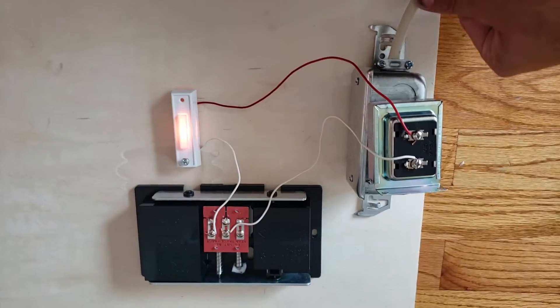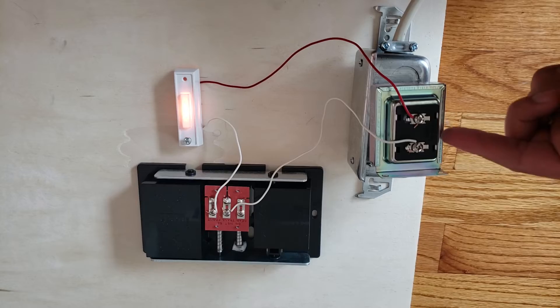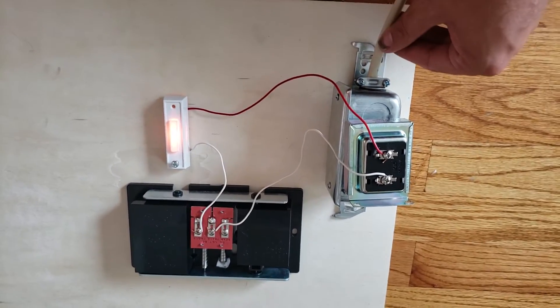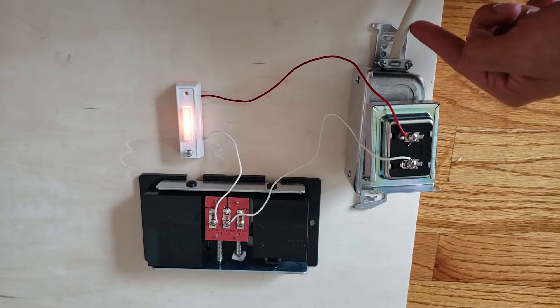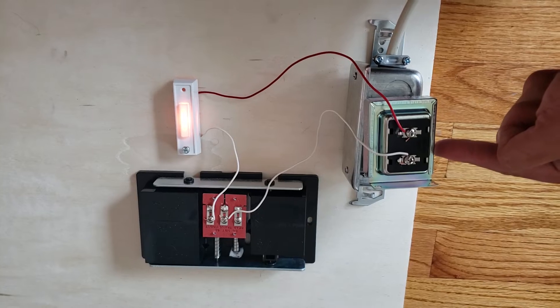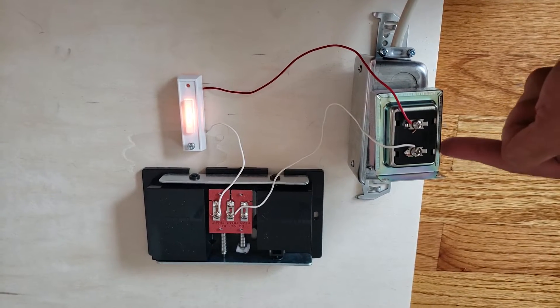So what you've got over here, I'm going to start with the transformer. That's what this is - this is a doorbell transformer. It takes high voltage which is coming from here, which is standard 120 volts. 120 volts goes into this junction box and then it goes into this transformer. That transformer transforms the voltage to lower voltage